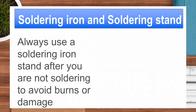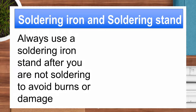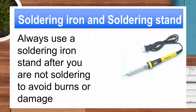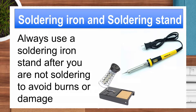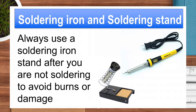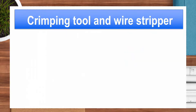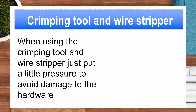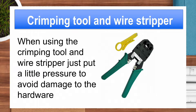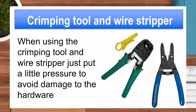Soldering iron and soldering stand. Always use a soldering iron stand when you are not soldering to avoid burns or damage. Crimping tool and wire stripper. When using the crimping tool and wire stripper, apply only a little pressure to avoid damage to the hardware.